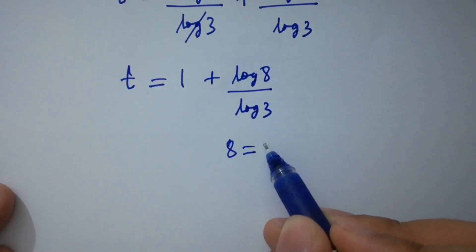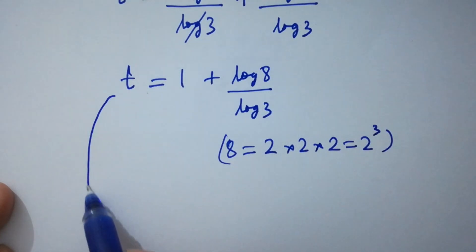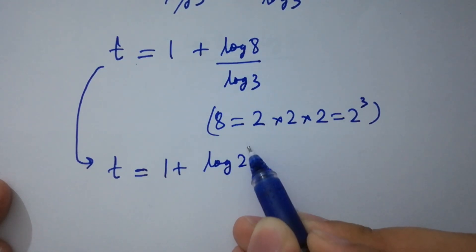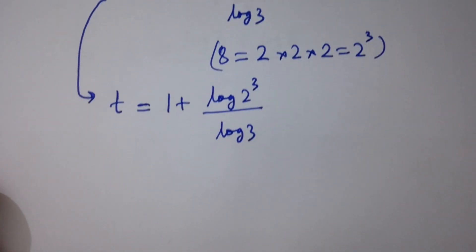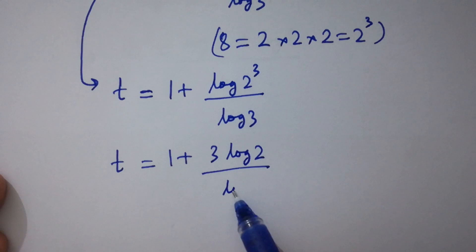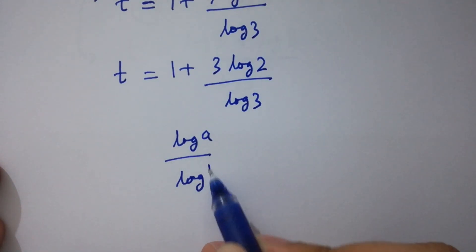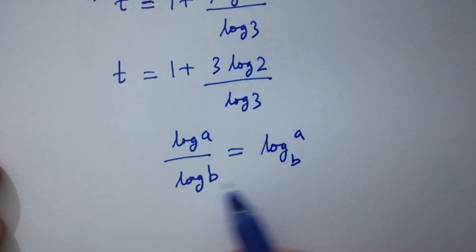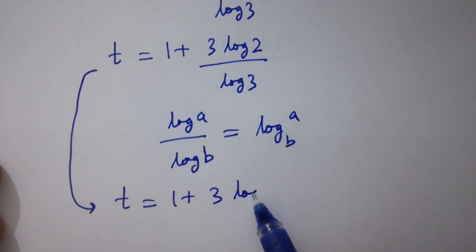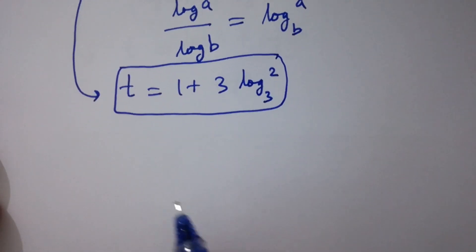As 8 equals 2 times 2 times 2, which equals 2 cubed, we have t equal to 1 plus log 2 cubed over log 3, which gives t equal to 1 plus 3 log 2 over log 3. Using the change of base rule — log a over log b equals log a to the base b — t will be equal to 1 plus 3 log 2 to the base 3, which is the value of t. In the last step I am going to verify.